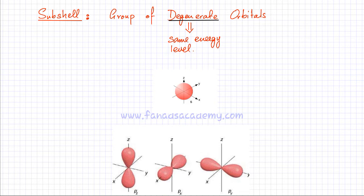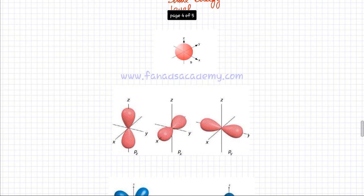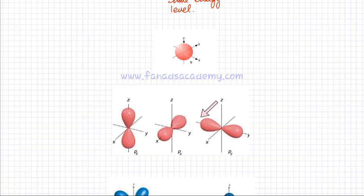A subshell is basically a grouping of orbitals. We studied S orbitals, P orbitals, D orbitals, and F orbitals. As shown here, the S orbital was a spherical region around the nucleus where there was a higher probability of finding an electron. Then you had P orbitals — three types: PX, PY, and PZ.